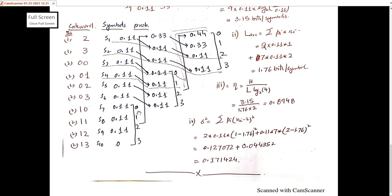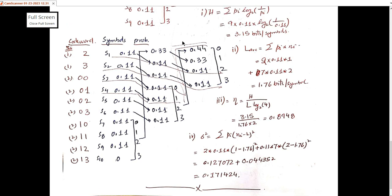After adding s10 with zero probability, we combine the last four symbols, take the combined result as high as possible, and move the probabilities accordingly. We repeat this process — combining groups of four, moving probabilities high, assigning 0, 1, 2, 3 — until complete. For the code words: s1 gets code 2, s3 gets code 3, and s10 gets code 13, following the same backward-path procedure.